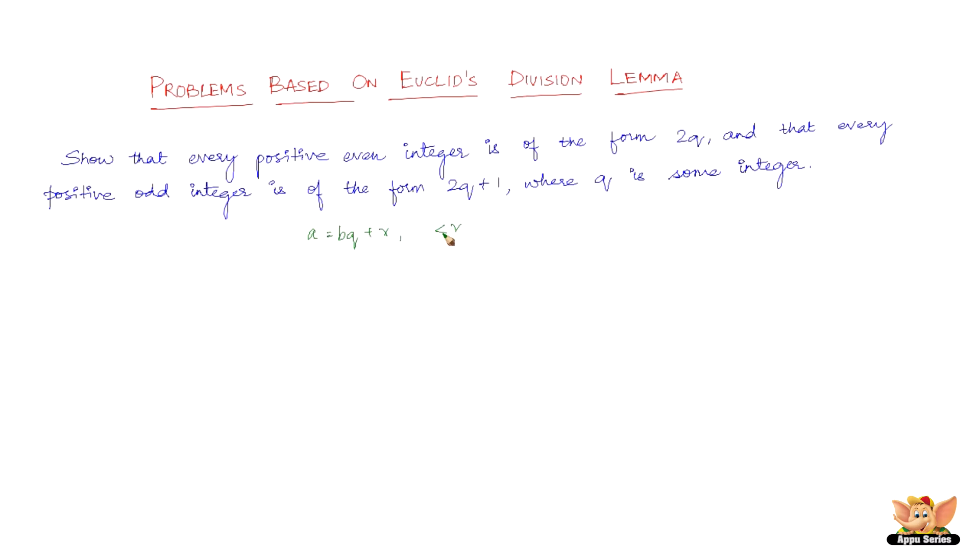where r is greater than or equal to 0 and less than b itself. So this is the reference that we have: a equals bq plus r.